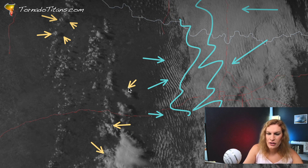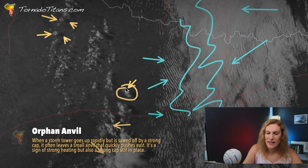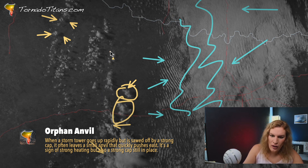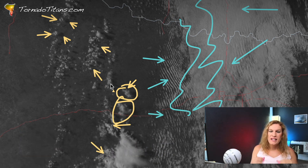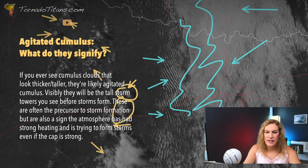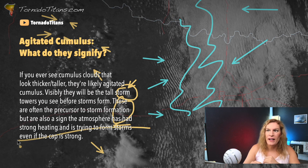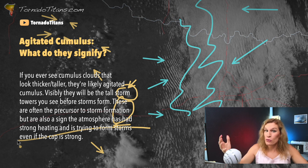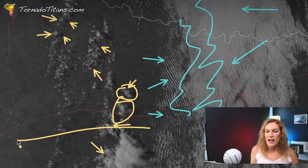You are seeing a little bit more agitation down here. Let me circle it — that's an orphan anvil. You can see a few through here as you go forward. But you're not seeing any deep, sustained convective attempts basically to the north of this line. Whatever's going on is not good — this environment is not looking like prime time or storm time.